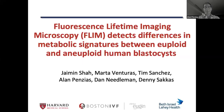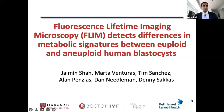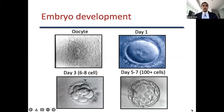Alan, thank you for that warm introduction. I have no disclosures. So in IVF, once we retrieve a patient's oocytes, we fertilize the oocytes with sperm to create embryos. These figures show the progression from an oocyte to a day one embryo, to a day three embryo, and finally to a day five to seven blastocyst.